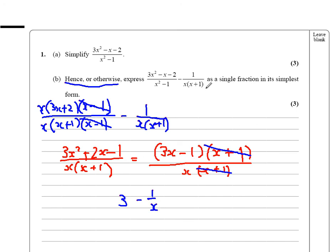The question says, as a single fraction, that's a single fraction. There, in its simplest form, this is not a single fraction at all, even though here I've split it up and made it probably simpler. Six marks.